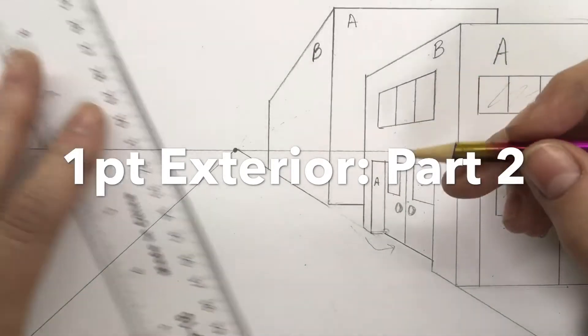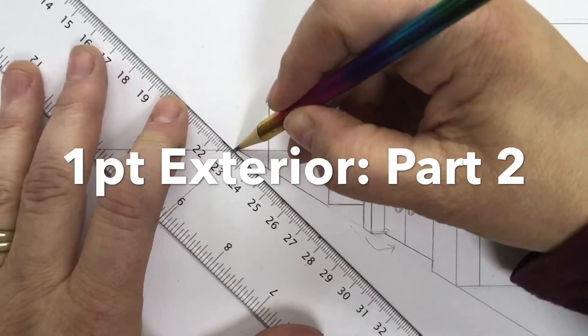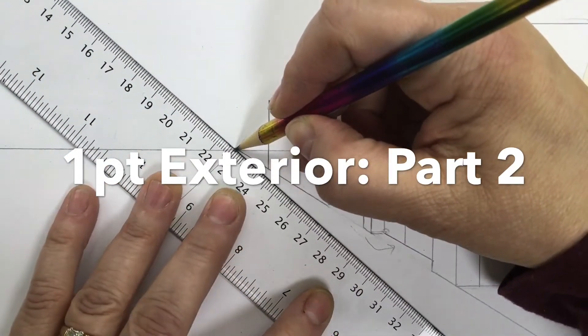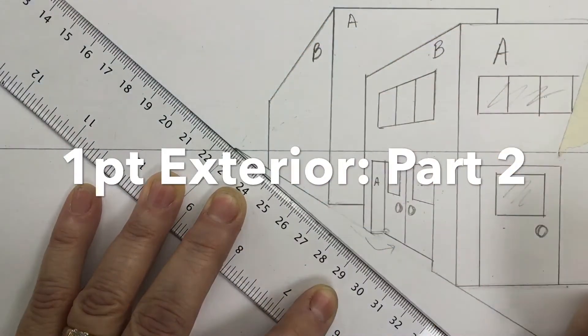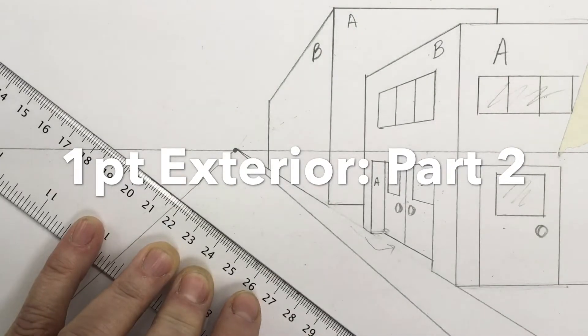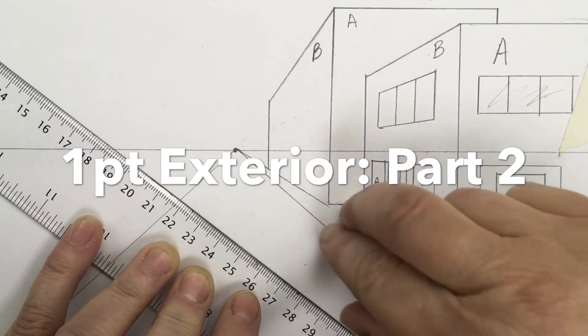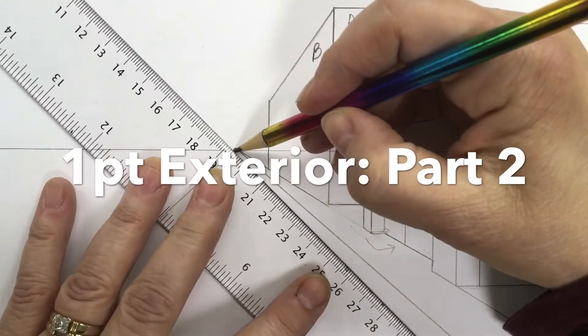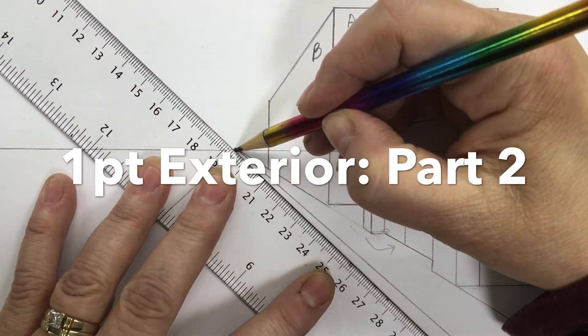To pull ourselves a sidewalk, we're going to draw two lines from the vanishing point and they're going to stretch along the front of the building here. I'm pulling along that way. This is the actual surface that you're walking on.